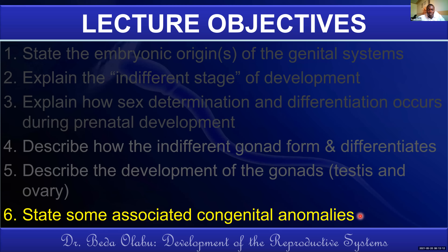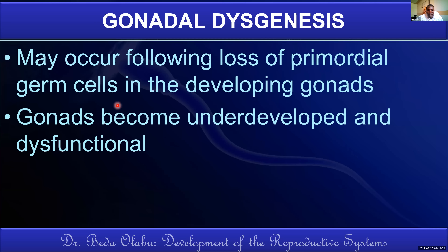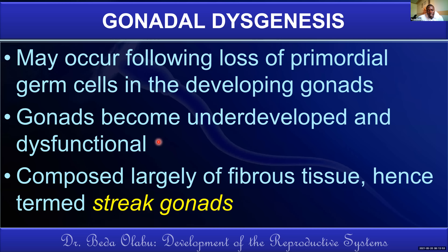Gonadal dysgenesis may occur if the primordial germ cells do not invade the developing gonad — in this case the gonad will not develop. This person will be infertile as there are no spermatogonia or oogonia. What was supposed to be the gonad will just become fibrous tissue — no testis, no ovary. The term given to this fibrous structure is a streak gonad.